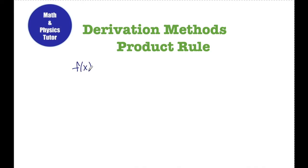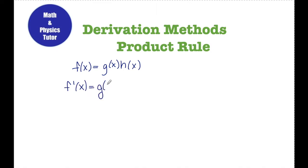Today we're going to be talking about finding the derivative of a function using the product rule. The product rule says if I have a function f of x that's written as a product of two functions, g of x times h of x, then the derivative of f is going to be equal to g of x times h prime of x plus h of x times g prime of x.